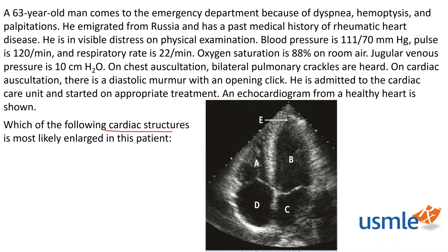For step four, we're going to read the question one sentence at a time, thinking about it as we go. We have a 63-year-old man coming from the emergency department for dyspnea, hemoptysis, and palpitations. He's immigrated from Russia and has a past medical history of rheumatic heart disease. He's in visible distress. Blood pressure is 111/70, pulse 120, respiratory rate 22, O2 sat 88% on room air. JVP is 10 cm of water, and on chest auscultation there are bilateral pulmonary crackles.